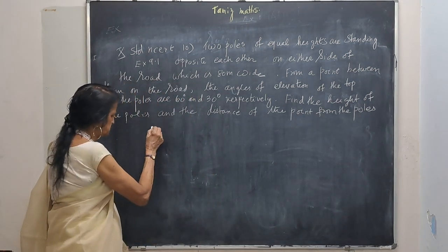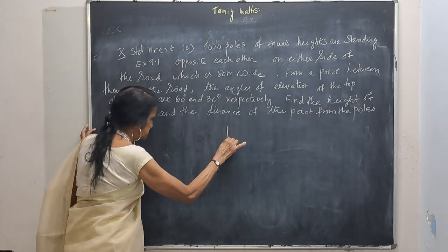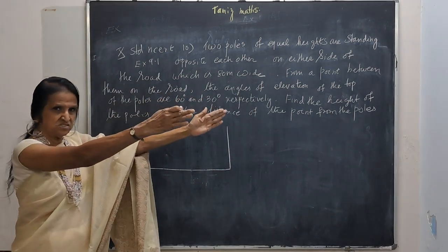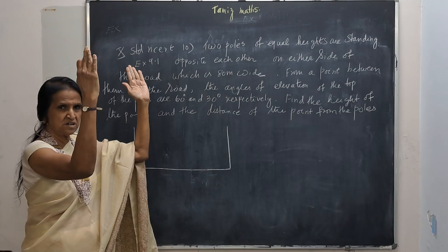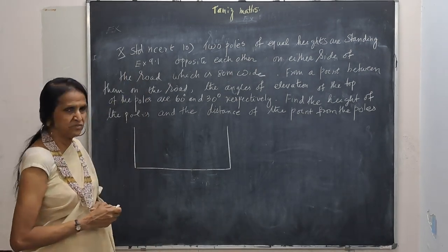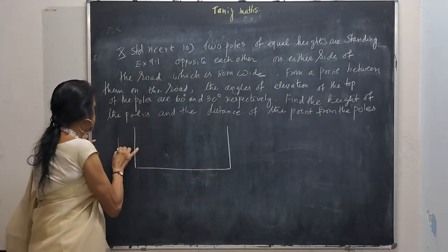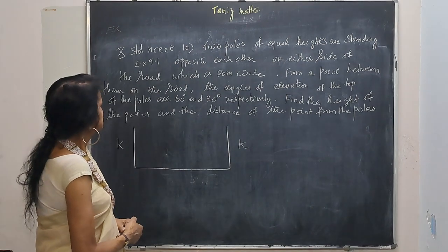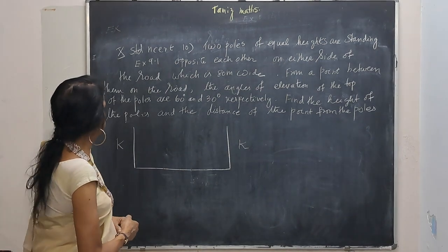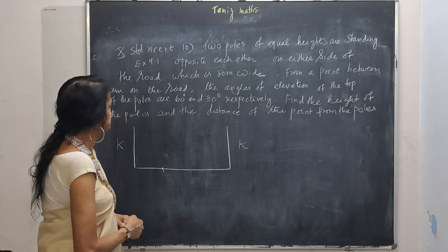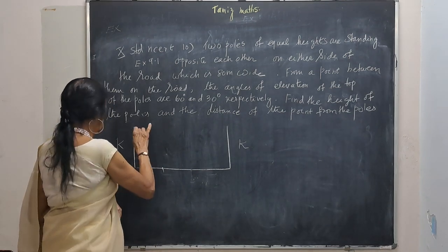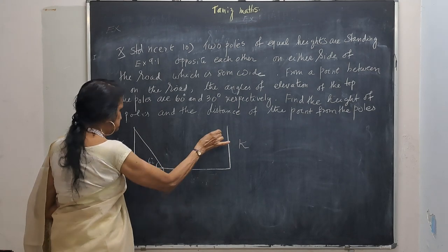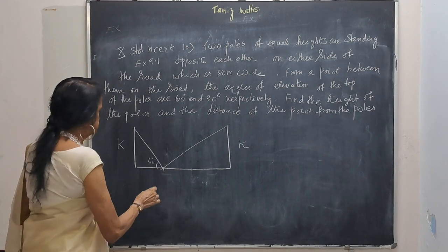There are two poles. There is a road. Road is like this. One pole is standing up, one pole is standing up opposite side of the road. They are equal length. Let's say this is K and this is K. From a point between them on the road, the angle of elevation of the top of the pole, one is 60 degrees and the other one is 30 degrees.